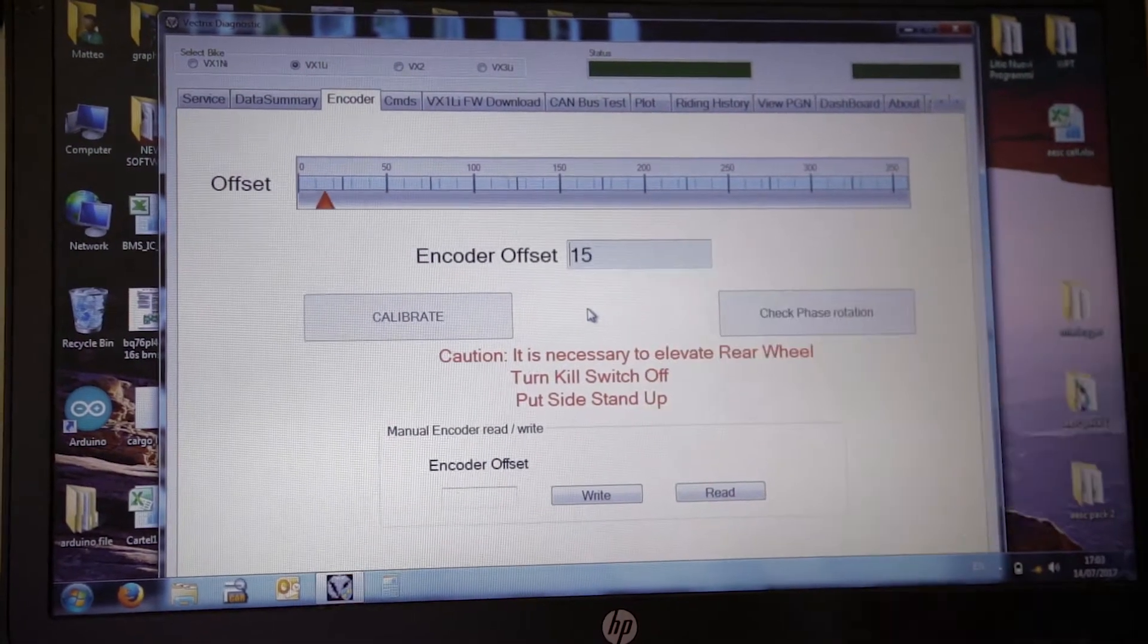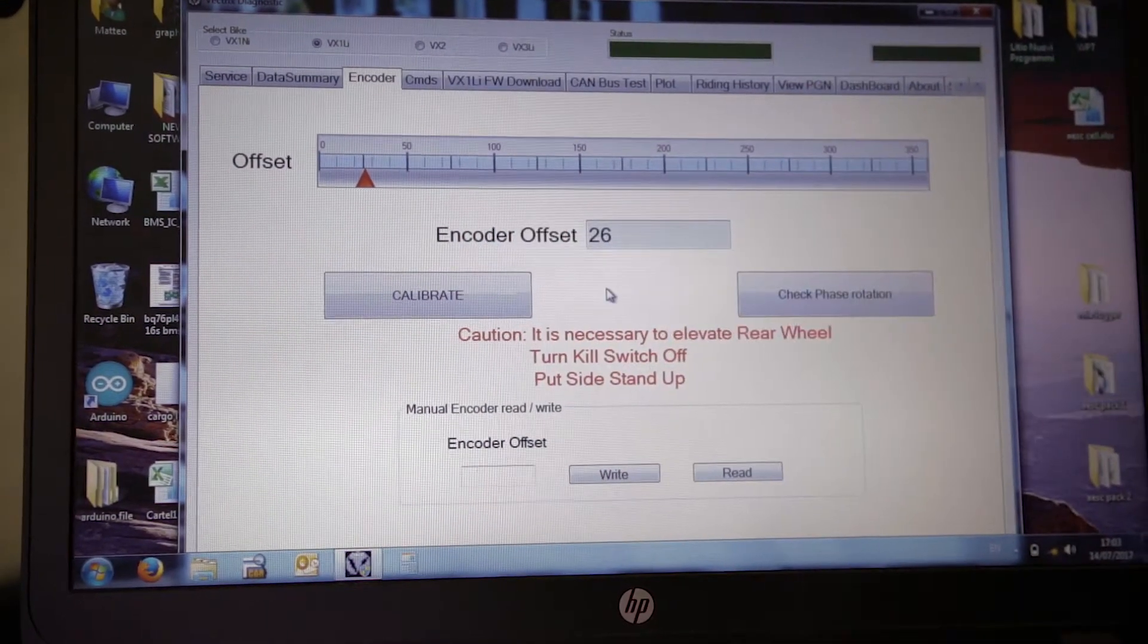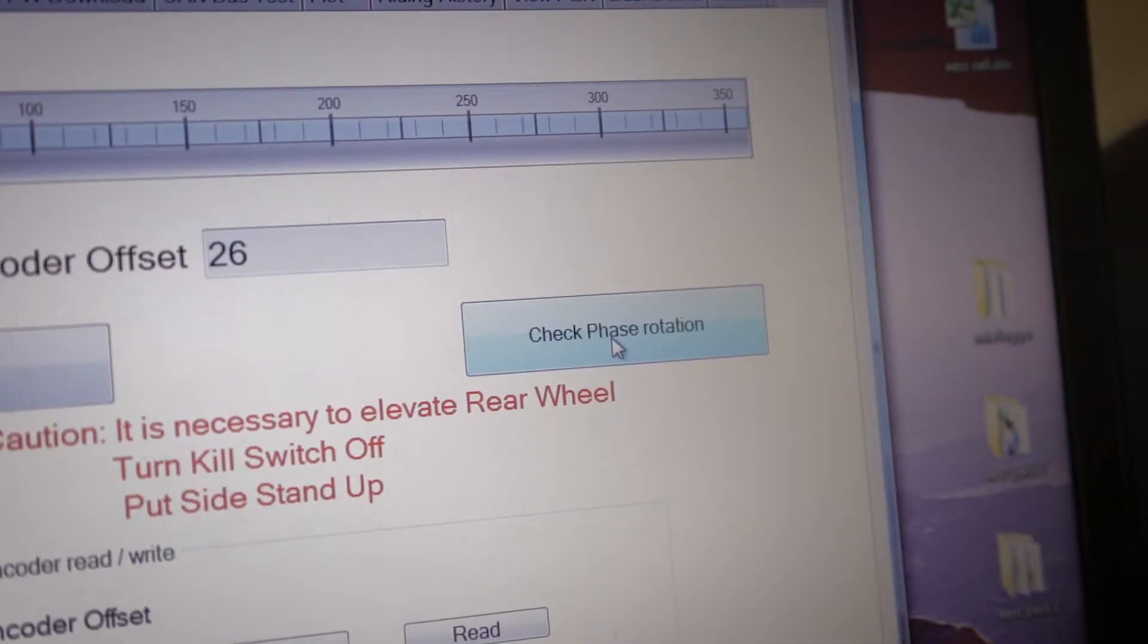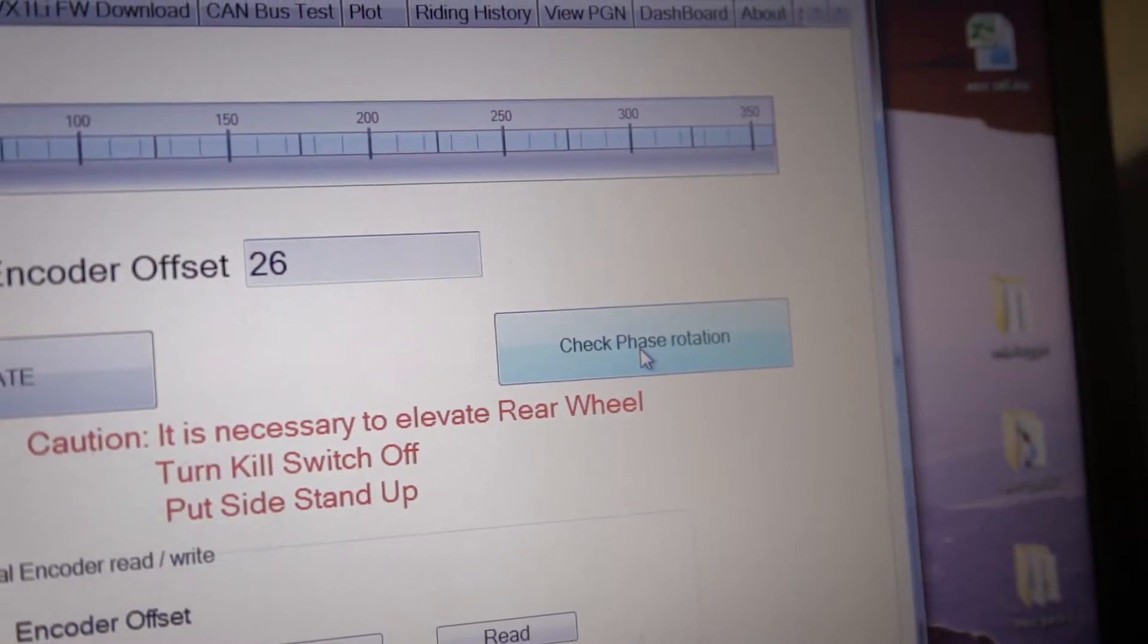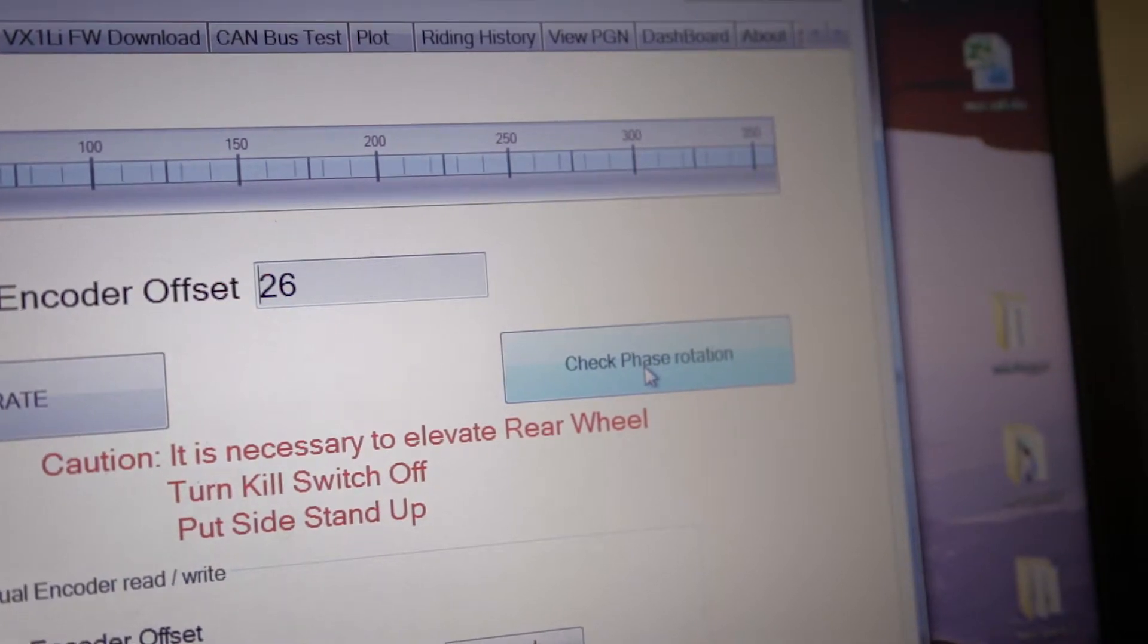On top of it, it will show us what is the angle recorded. So we have an offset from the zero position of 26 degrees. We can also have another button here to check if the motor phases are properly connected. Remember the phase ABC.